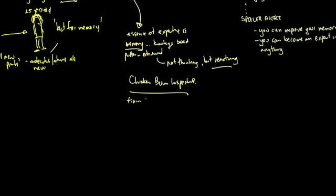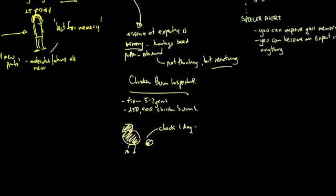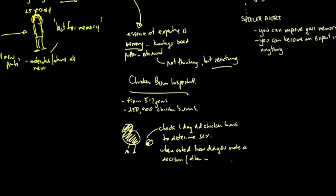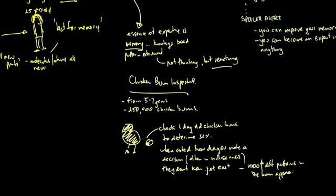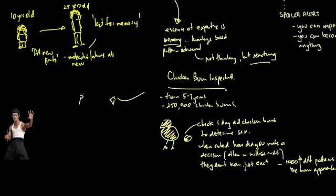The example he gave was very memorable. Chicken Bum Inspectors. In order to determine the sex of a chicken, you need to train for five to seven years. Look at about 250,000 chicken bums, and then you flip them upside down, and you can tell within milliseconds whether they're male or female. You have to process thousands of different vent patterns, but it's almost done without thinking. Again, reacting. And it's all about memory, and almost that subconscious implicit memory is that you don't even know how you record it, but that you just know.